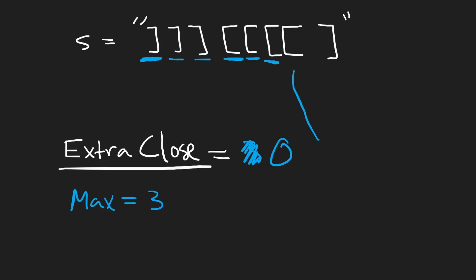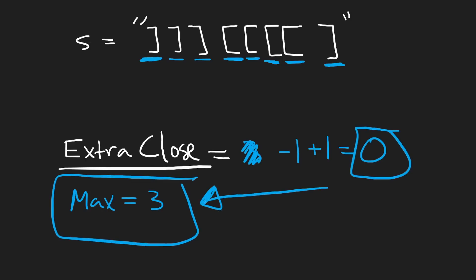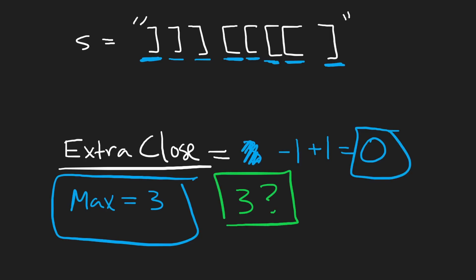We have one more closing bracket, so zero becomes negative one with an opening bracket, then add one for a closing bracket and we're back to zero. Our maximum at any given point was three — we had three extra closing brackets. So does that mean our answer equals three? Are we returning three?